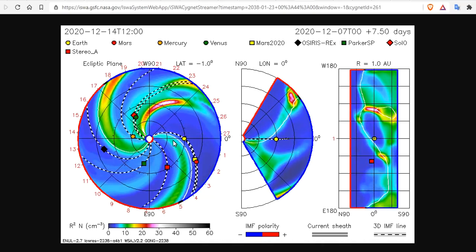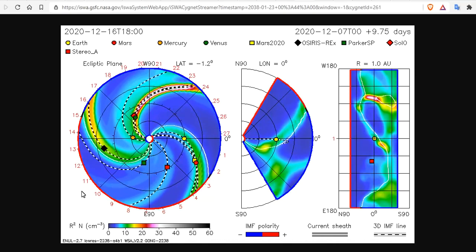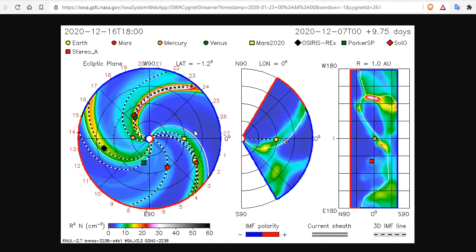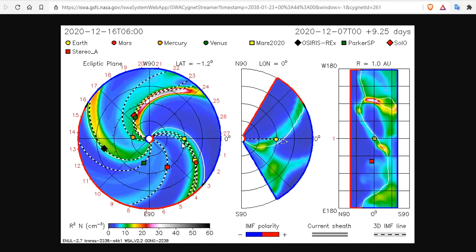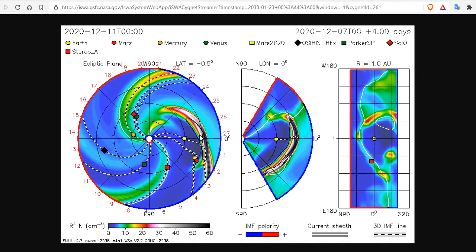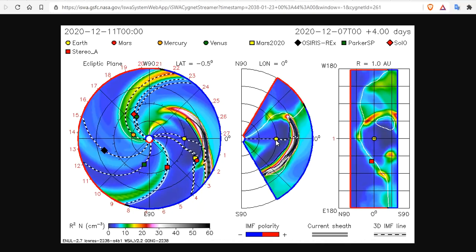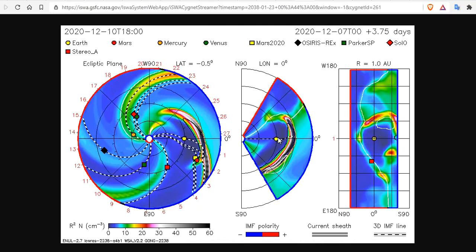Now, we should be taking note of this because at the same time this is hitting us, we have this co-rotating region from the M4.4 flare. That energy will be hitting us right here at the same time that the flare hits us. There it is, second wave.